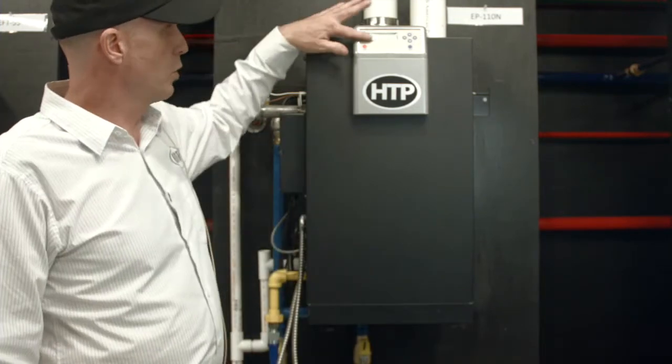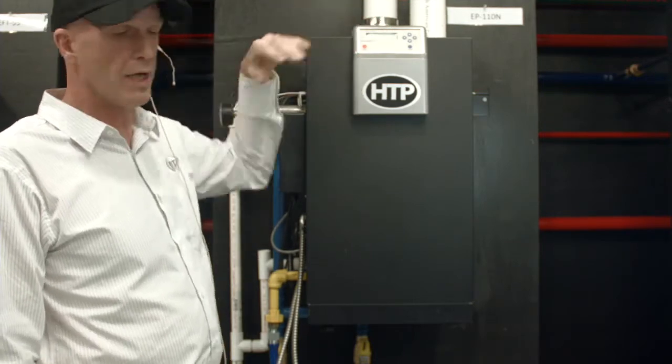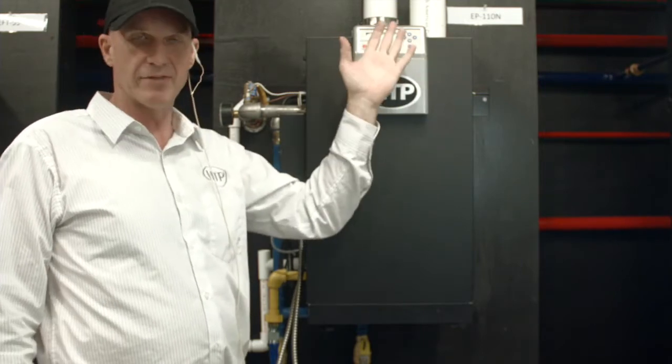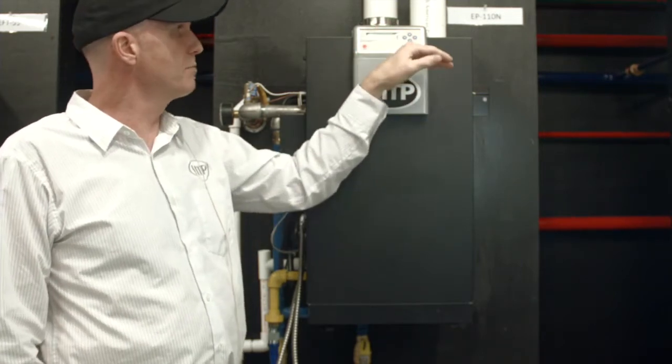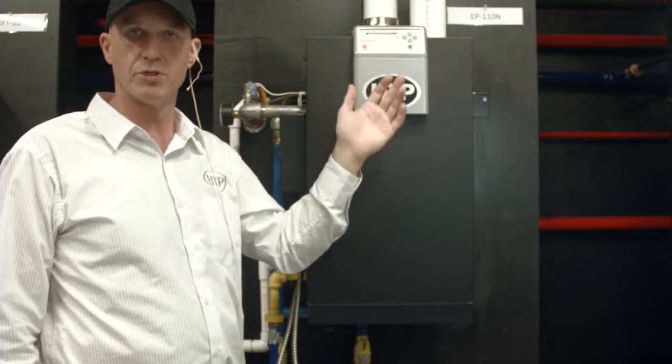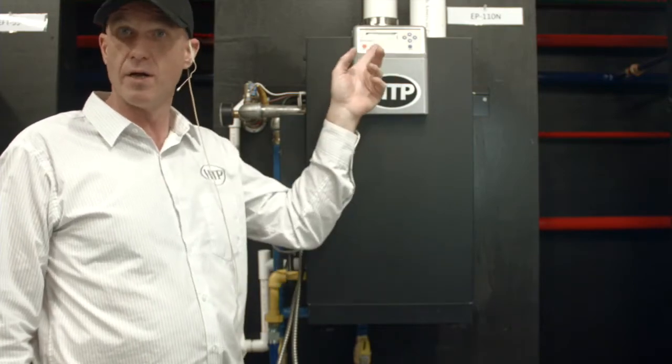It features an easy-to-use control interface. So it has a 40-character two-line LCD display on it. It has up, down, left, and right arrows to navigate through all the menus and it has an enter button, of course, to store things and a reset button that will bring you back to home every time you push it. So just a real easy-to-use interface and gives you a lot of information right on the screen.